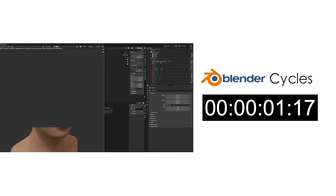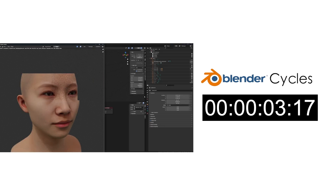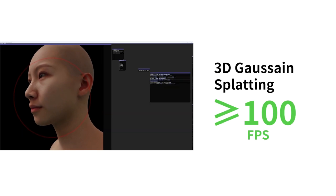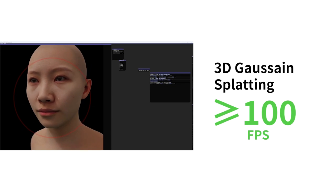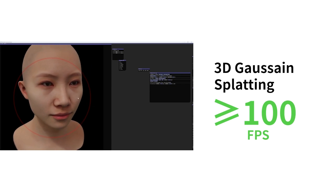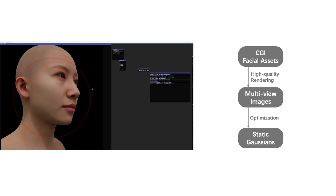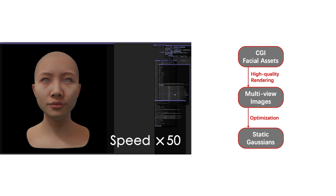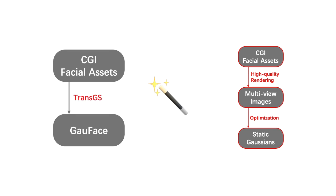In traditional CG workflows, rendering high-quality faces takes a lot of time. Recent advances like 3D Gaussian Splats offer promising solutions for real-time rendering. However, converting CG assets into their Gaussian version requires hours of data preparation and optimization, limiting their practical applications. An instant generative translator from traditional CG assets to Gaussians is needed.